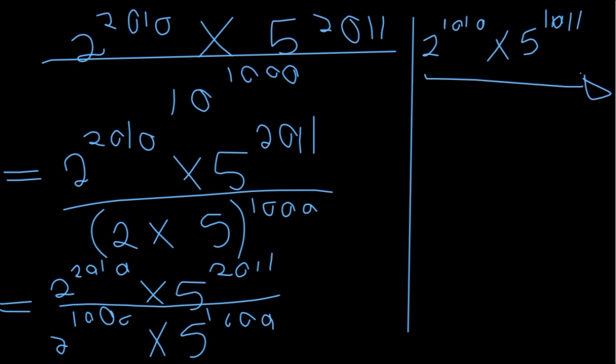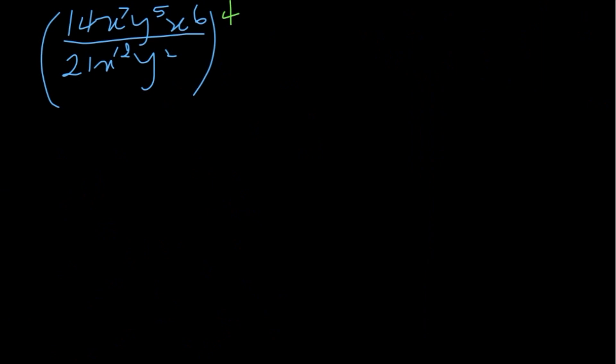That was a little bit tricky — you need to be careful. Sometimes when given such an expression, you may not need to rewrite it in that form; you may be required to take out the highest common factor instead. Now let's look at the last example: (14x⁷y⁵ · x⁶) all over (21x¹²y²), all raised to the power of 4. Just before raising everything to the power of 4, I want to simplify the fraction first. 14 divided by 21 gives 2 over 3.